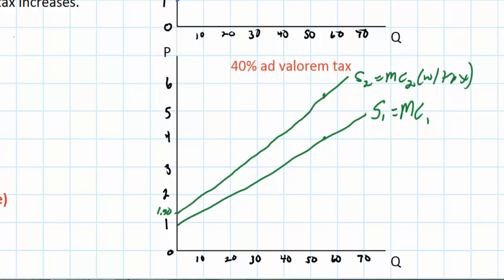And the main difference here is that the slope has increased because the amount of tax placed on the good increases as the price increases. So down here we have only $0.40 between the two supply curves. Whereas up here at a price of $4, the distance is $1.60 or 40% of $4.